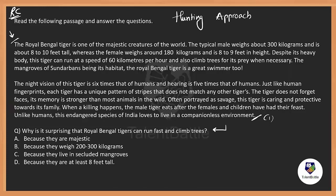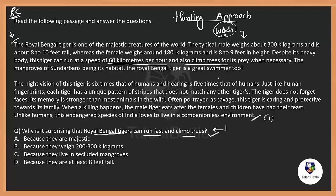So here we have a method called the hunting approach. What is the hunting approach? We hunt for words in the passage that were asked in the question. What I'll do is firstly not read the paragraph as it is, but only look for key words that can be memorized from the question. I'll read the question once: 'Why is it surprising that Royal Bengal tigers can run fast and climb trees?' Those are the words I'm looking for. I just scan the words. You'd have found here '60 kilometers per hour and also climb trees.'